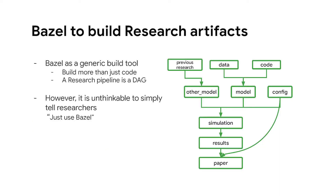So how can we use Bazel to help? As many of us know, Bazel is a great tool to build software. It turns out it can build more than just software — it can build pretty much anything you can represent as a directed acyclical graph. And when you look at a research pipeline, it's actually a very good example of such a directed acyclical graph.